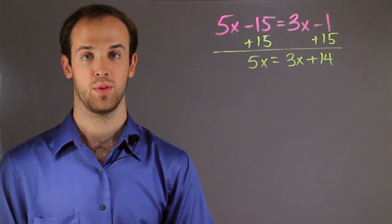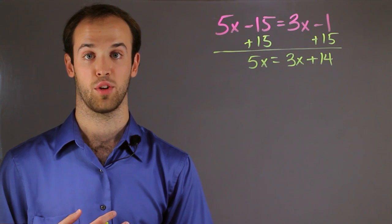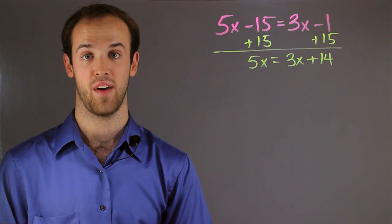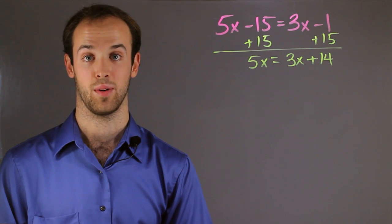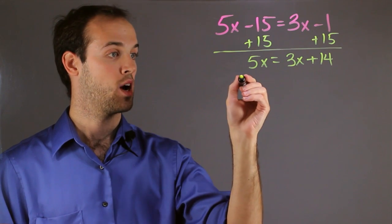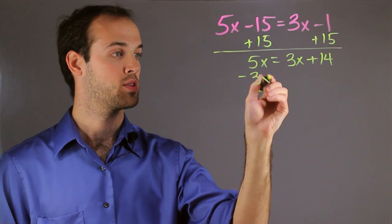The next thing I want to do is move this 3x on the right side over to the left side, so that it can be combined with the 5x. And since it's being added right now, it's positive, I have to subtract it. So I'm going to subtract 3x from both sides.